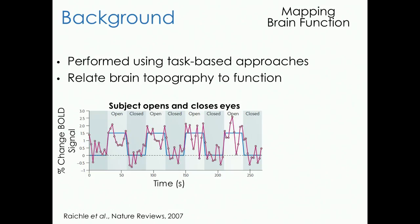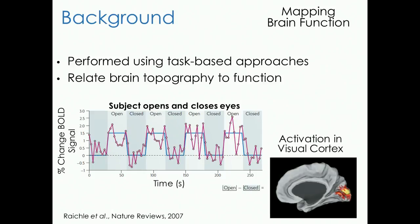Traditionally, methods for mapping out brain function were performed using task-based approaches. For example, a subject was asked to open and close their eyes at fixed intervals, and then changes associated with the task were measured using the BOLD signal through an fMRI bore. If you subtract all of the closed frames from the open frames, you can generate a map of where this activity occurred, allowing researchers to relate brain topography to function.